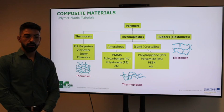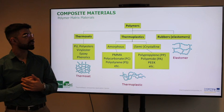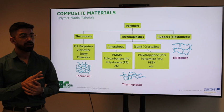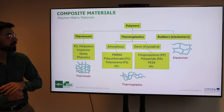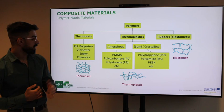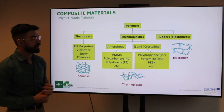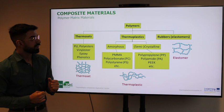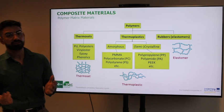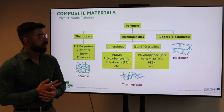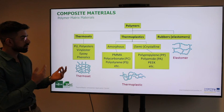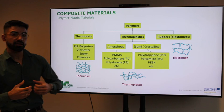Going more specifically to polymer matrix composites: as seen in lecture one, we can distinguish polymers as thermosets, thermoplastics, and rubbers (elastomers). Thermosets include polyesters, vinylester, and epoxies, distinguished from thermoplastics by their polymer network cross-links. Thermoplastics can be divided into amorphous — like polycarbonate and polystyrene — and semi-crystalline — like polypropylene and polyethylene. Rubbers are elastomers, distinguished from thermosets and thermoplastics because they also have networks but with high flexibility of the chains.